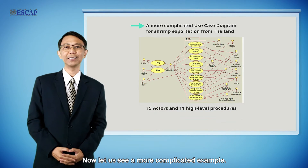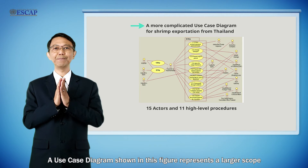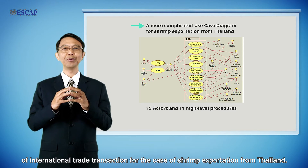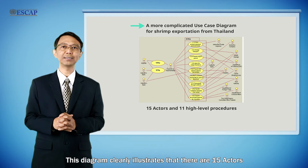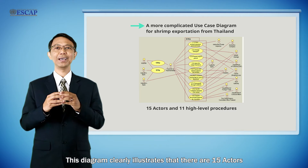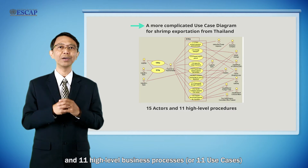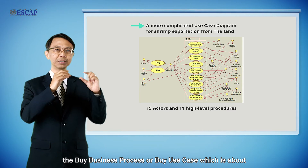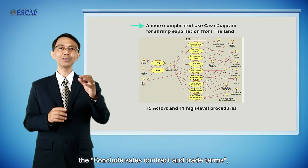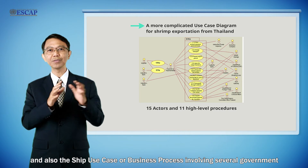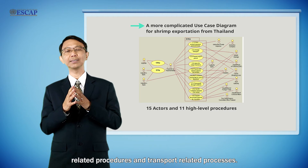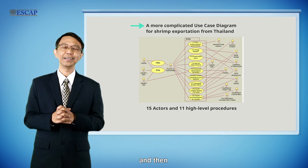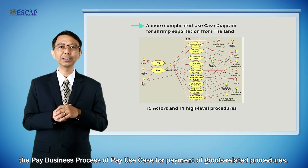Now let us see a more complicated example. The use case diagram shown in this figure represents a larger scope of international trade transactions for the case of a shrimp exportation from Thailand. This diagram clearly illustrates that there are 15 actors and 11 high-level business processes, or 11 use cases, covering from the 'Buy' use case about concluding sales contracts and trade terms, to the 'Ship' use case involving several government-related and transport-related processes until the vessel leaves port, and then the 'Pay' use case for payment of goods-related procedures.